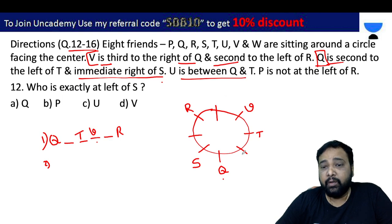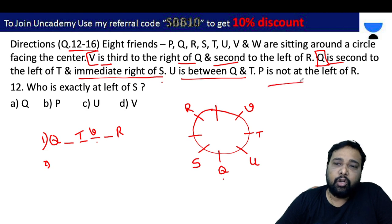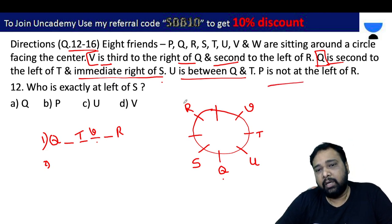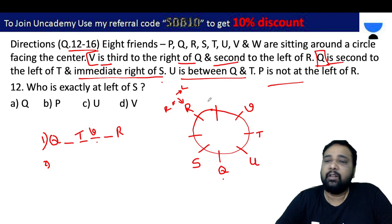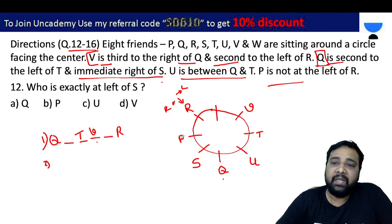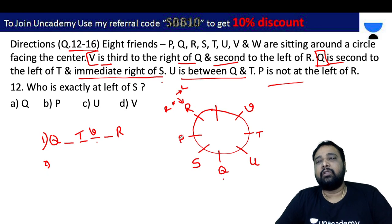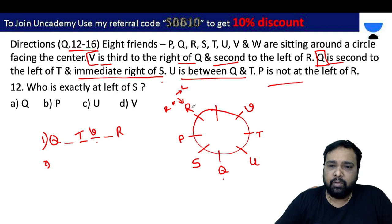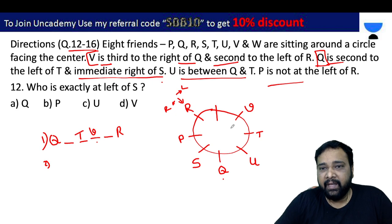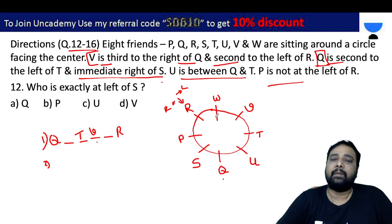U is between Q and T. P is not to the left of R. In circular arrangement, the left side of R relates to facing the center — right hand of T, left hand side. P is not on the left side of R. So listing the eight friends: P, Q, R, S, T, U, V, W — the remaining letter is W. This completes the circular arrangement.